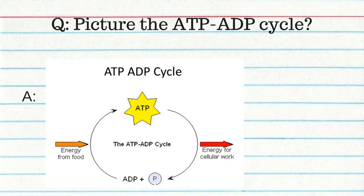ATP stands for adenosine triphosphate. The three parts of ATP are adenine, ribose, and three phosphate groups. Energy is found in the bonds that attach the three phosphate groups to the molecule. ADP stands for adenosine diphosphate and has only two phosphate groups. ATP only transfers energy.